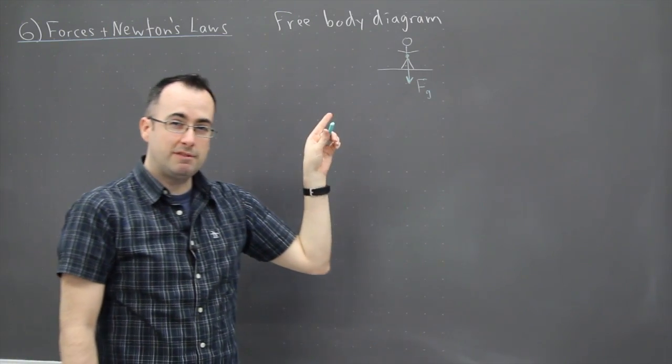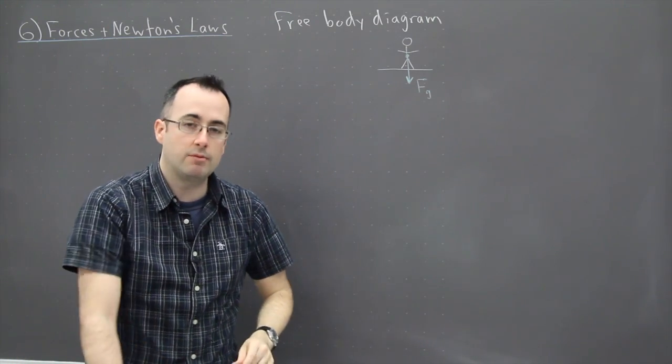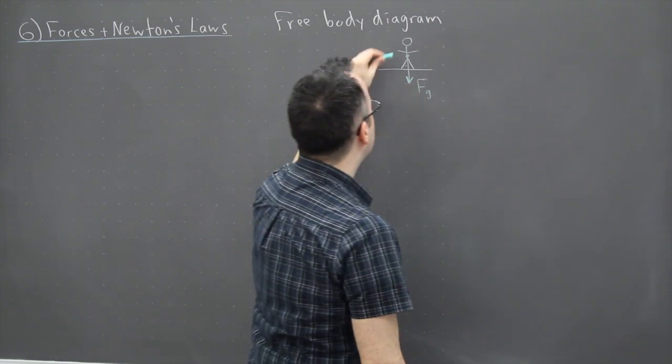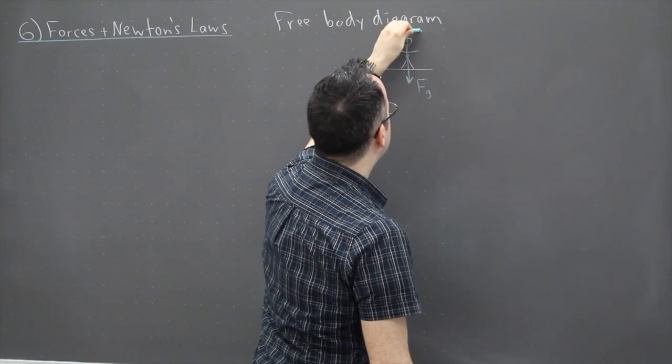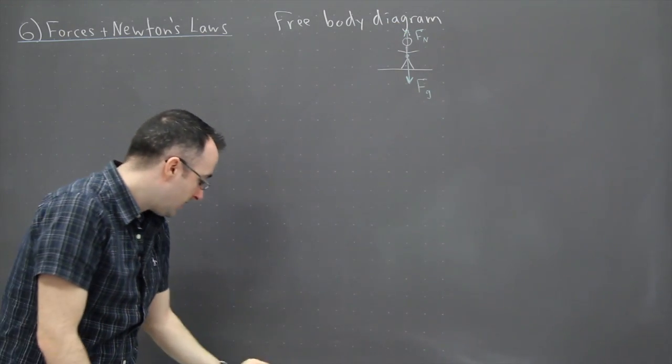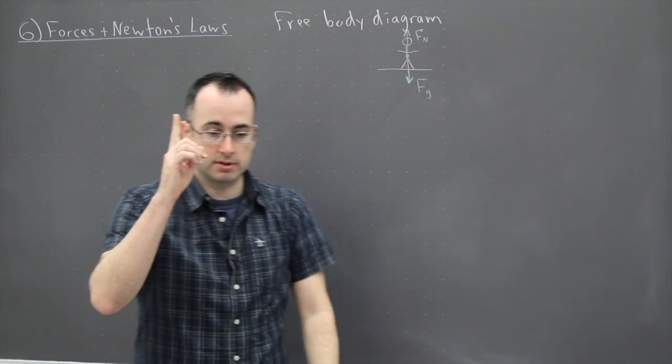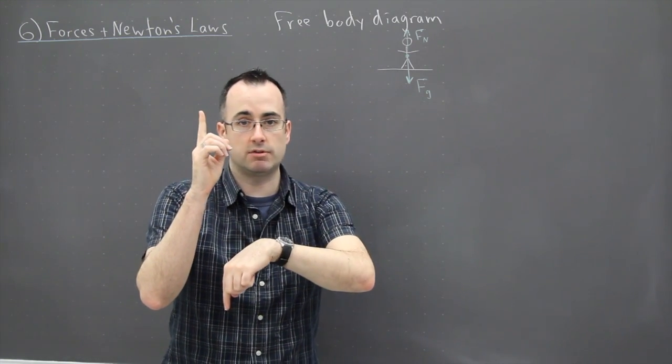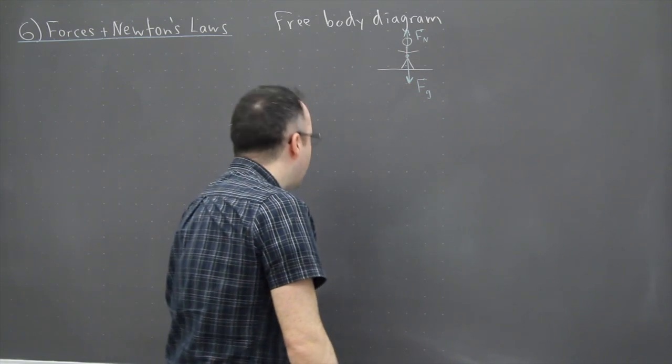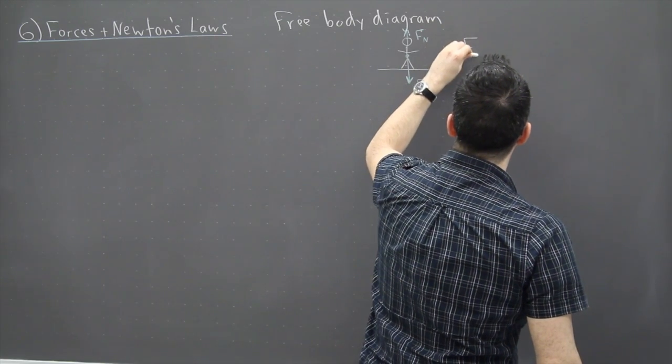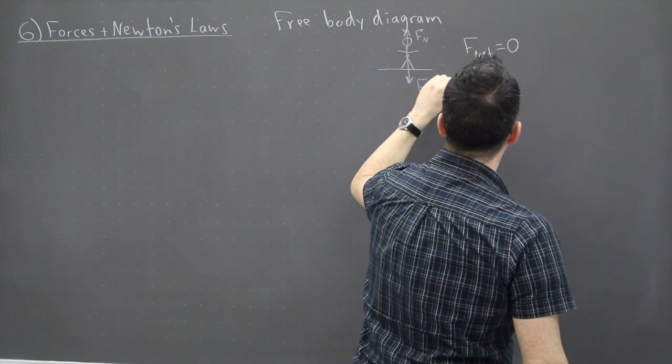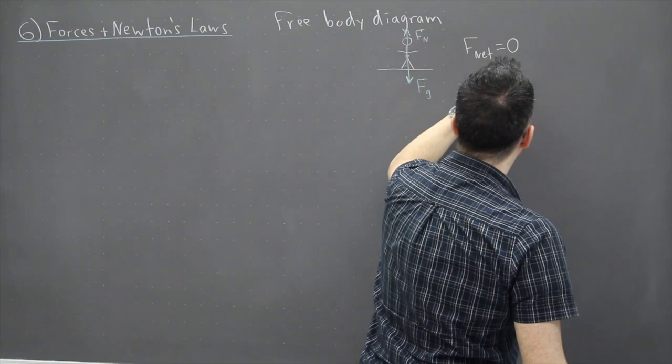Now of course if that was the only force acting on me, I'd actually be flying downwards. The fact that I'm not tells me there must be another force, and it turns out there is an upwards force as well. And that's what we call a normal force, so I'll label it F with a little n. Now at the moment that normal force going upwards and the downwards force, they're equaling each other out. In other words, they're equal but opposite directions. And as a result, because they balance each other out, then I'll say this: that if F net equals zero, then there's no acceleration.